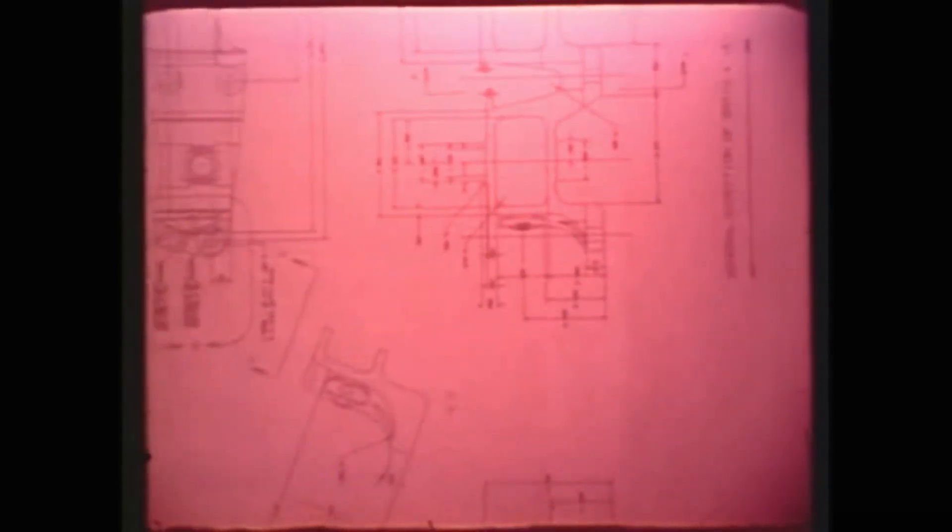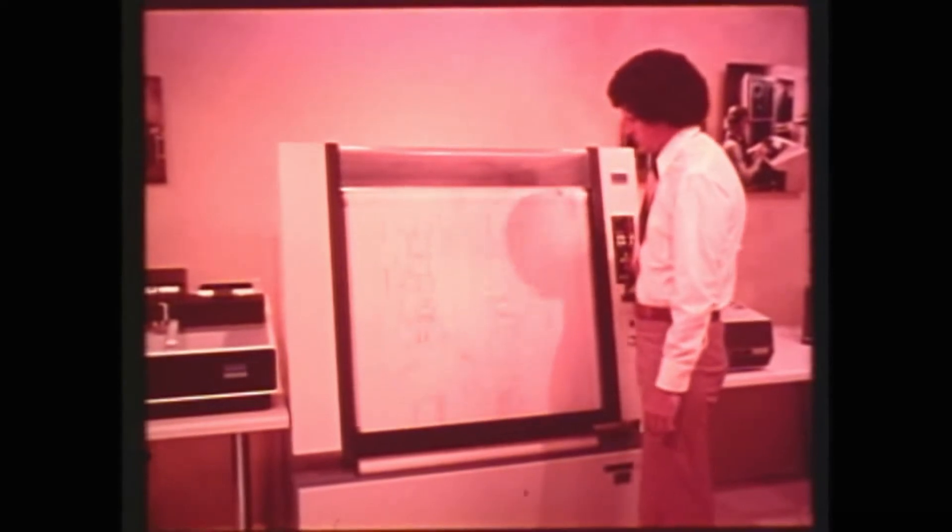Now that the design is complete, the engineer can produce full-size, high-quality engineering drawings with UniGraphics and its automatic drafting equipment. The design of the part is now complete on UniGraphics — two days, only 16 man hours.